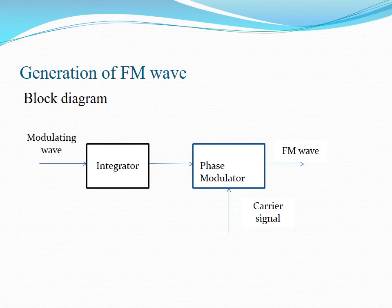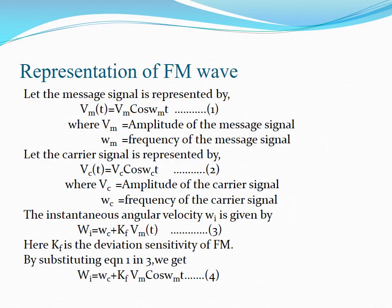This is the block diagram for generating the FM signal. First, the input message signal is given to the integrator. The integrator integrates the message and the output is given to the phase modulator. The next input to the phase modulator is the carrier signal. The phase modulator modulates the two signals and generates the FM signal.